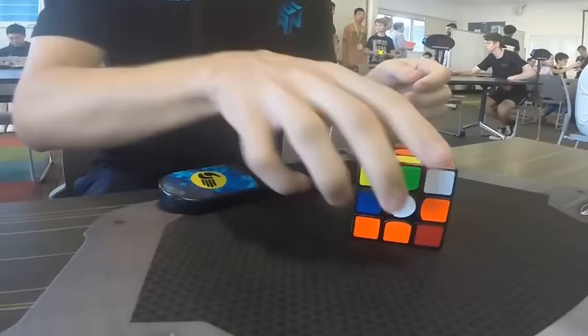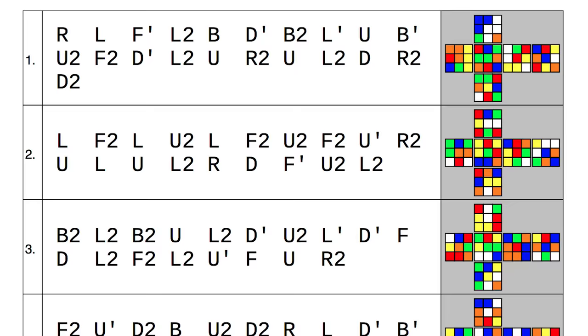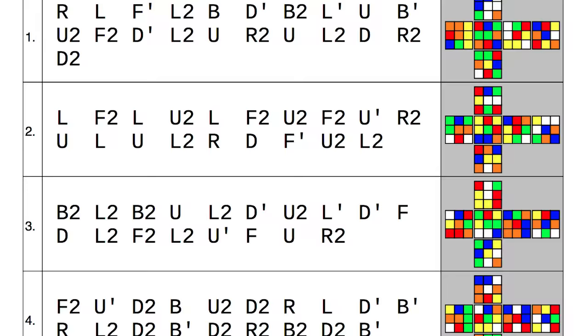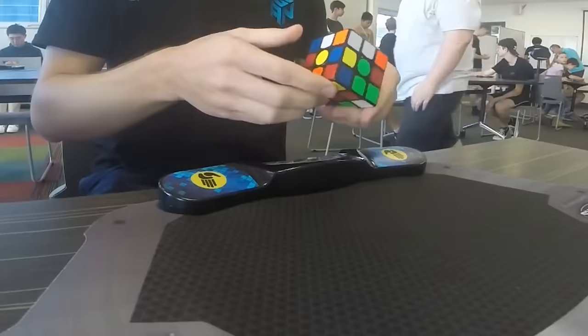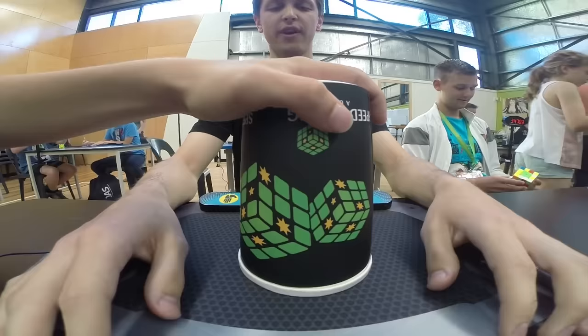One round in competition consists of five solve attempts. A computer randomly generates the scrambles to make sure they're difficult enough. And each competitor solves the same five scrambles. You get asked, are you ready? They'll take off the cover. And then you have up to 15 seconds to look at the cube and start the timer.